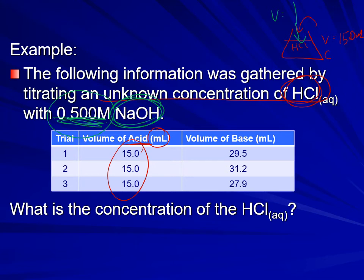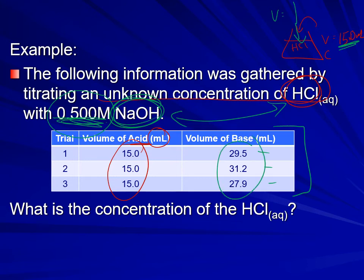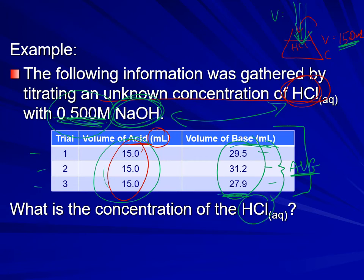We know how many moles of base it took to reach the equivalence point. Using the volume of the acid and the mole ratio between acid and base, we can find the concentration of the acid. Because each trial introduces some error, we do multiple trials — trying to err in opposite directions — and then average them. We have three trials here, and rather than calculating the concentration separately for each, we take the average volume of base added across all three trials and do a single calculation.